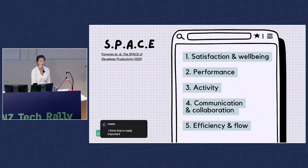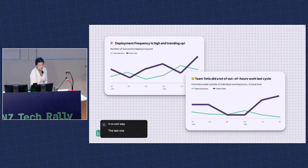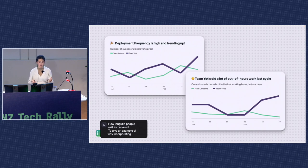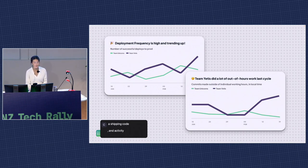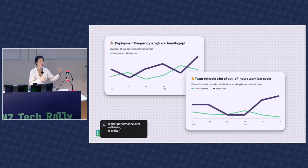The last SPACE dimension is efficiency and flow — lead time, focus time, how often people are interrupted, how long people wait for reviews. To give an example of why incorporating wellbeing and collaboration is important: let's say Team Yetis is shipping code faster — that's a performance metric — but they're also doing more out-of-hours work, so the wellbeing metric is going badly. This makes sure people aren't getting high performance at the expense of wellbeing, which would never be sustainable anyway. It's often an early indicator of burnout and churn.